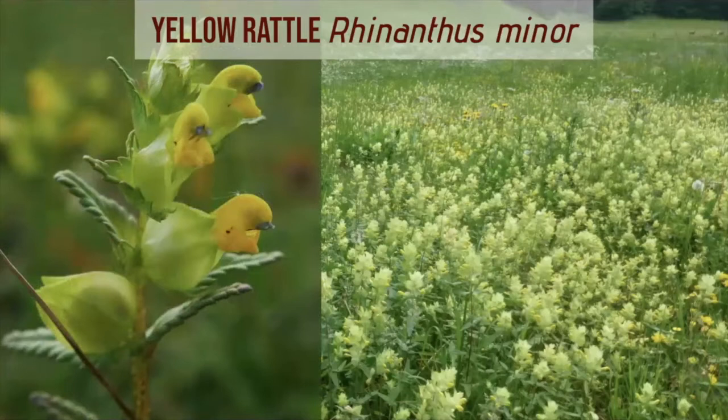They've also got common names such as meadow maker or nature's lawnmower, and yellow rattle is probably the single most important plant you need to establish when creating a wildflower meadow. It's an annual plant that completes its entire life cycle within a year, and as its roots develop during the springtime seeking out the roots of grasses, they draw nutrients from them and can suppress grass growth by as much as 60%, creating space for other wildflowers to come in.